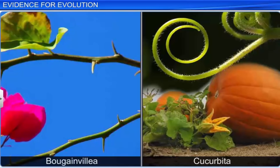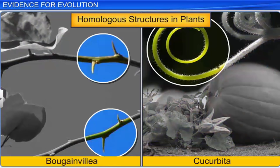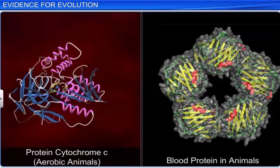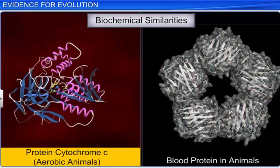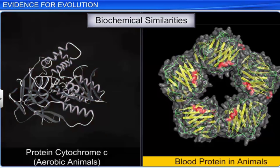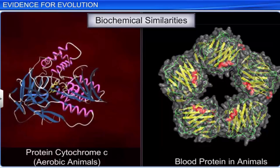Similarly, in plants, the thorns of the bougainvillea and tendrils of the cucurbita represent homologous structures and indicate common ancestry. In the same way, biochemical similarities also point to a common ancestry. For example, similarities in a protein called cytochrome C in all aerobic organisms, and blood proteins in animals, provide evidence that these organisms have descended from a common ancestor.